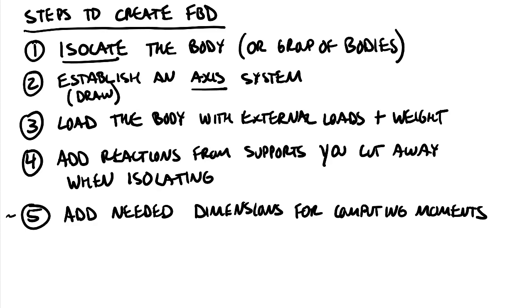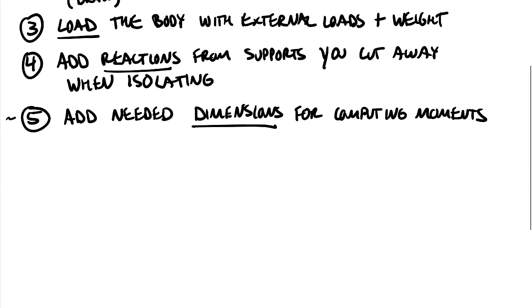So a review of these: we want to isolate, we want an axis system, we want to make sure that we load the body with external loads, add our reactions and add our dimensions. So those five things, isolate, axis, load, reactions and dimensions, you can think of as the five fingers of free body diagrams if you want to memorize them that way. So you can check all your free body diagrams and then we get into the remaining steps to solve the problem. So the remaining steps to solve.